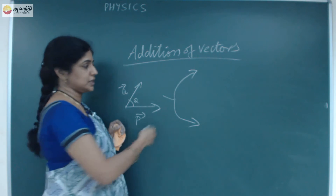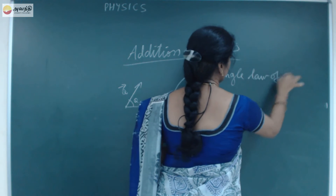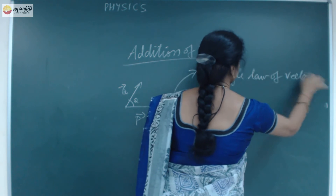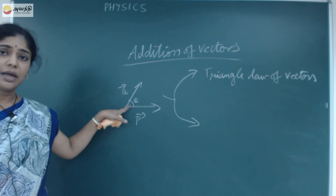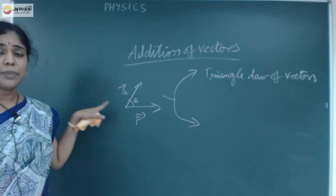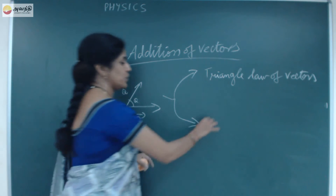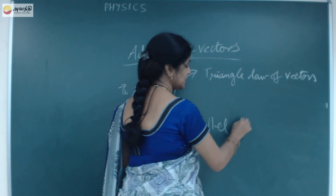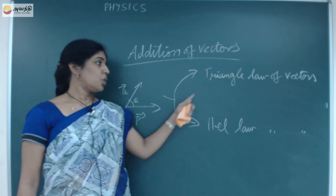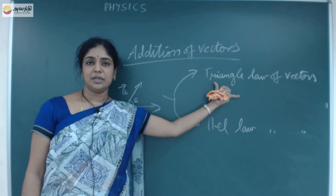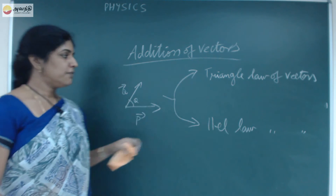We have 2 laws to find out the addition of inclined vectors. One is the Triangle Law of vectors, and the other one is the Parallelogram Law of vectors. So if any 2 vectors are inclined, we use one of these two methods to find out the resultant.